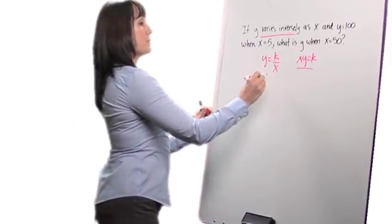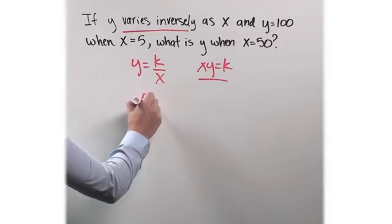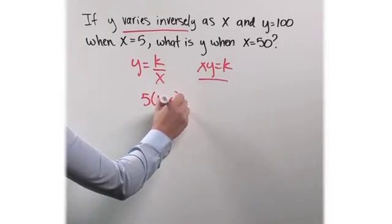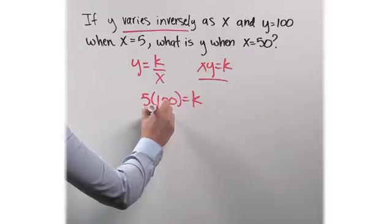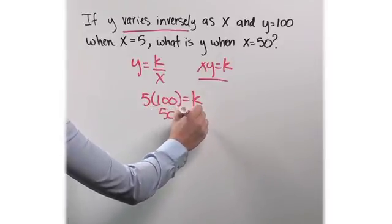So, y equals 100 when x equals 5. So I have 5 times 100 equals k. That means 500 equals k.